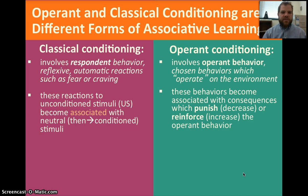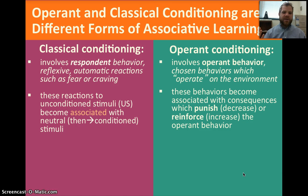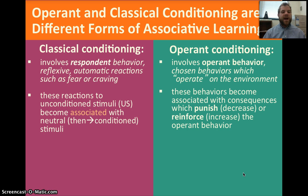There are some differences between operant and classical conditioning, but they're both forms of associative learning. Classical conditioning involves respondent behavior — meaning involuntary, reflexive, automatic actions, reactions such as fear or craving. These reactions to unconscious stimuli become associated with the neutral stimulus, which then becomes a conditioned stimulus. Remember, Pavlov's dog associated the bell, which was the neutral stimulus, with the unconditioned stimulus, which was the food.